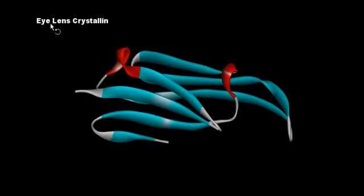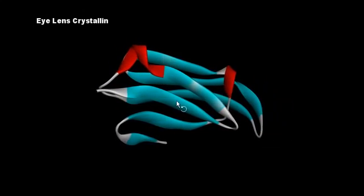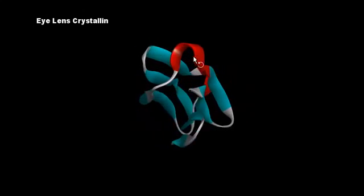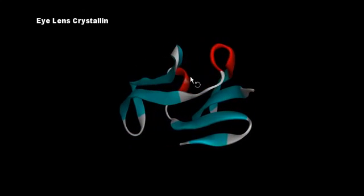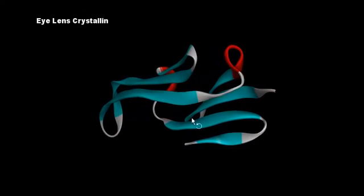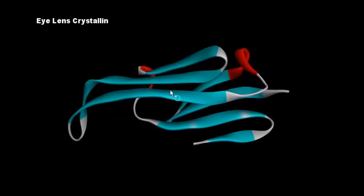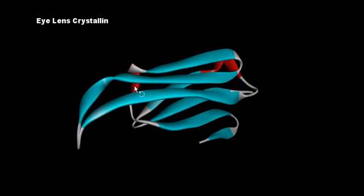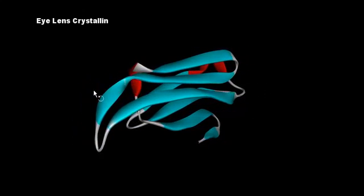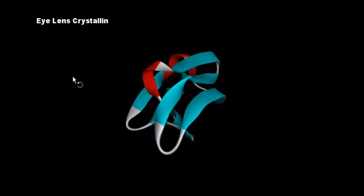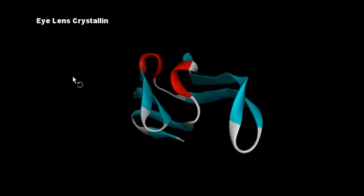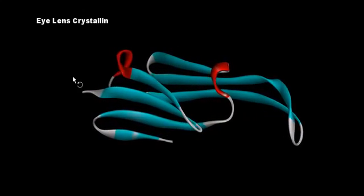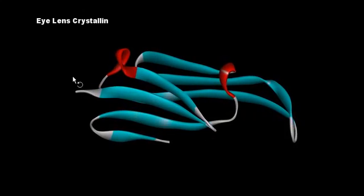A good example of the beta pleated sheet is crystallin of the human eye, shown here with beta pleated sheets in blue and some slightly alpha helical regions in red — it is primarily beta pleated sheets with a little alpha helix as well. These are very important proteins, and hopefully this adds to your knowledge of protein structure and function.